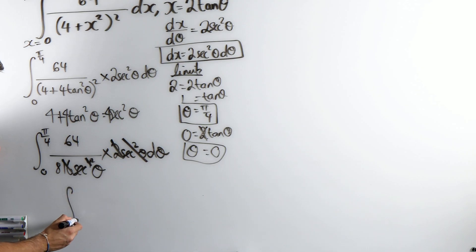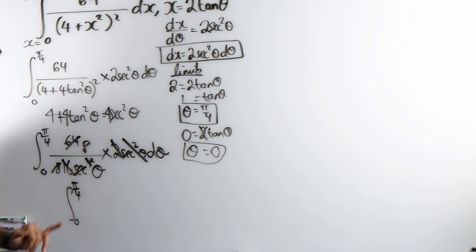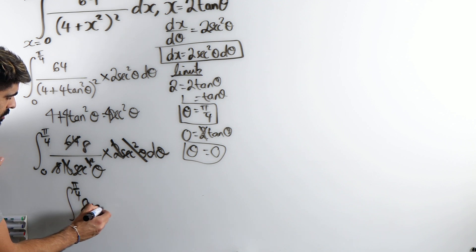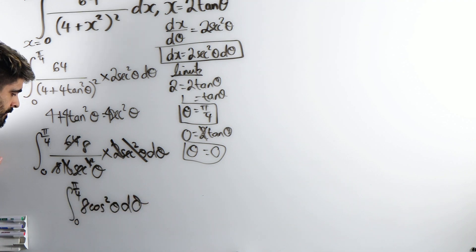So we're going to get the integral between 0 and pi over 4 of 8 over sec squared. Now remember sec squared is 1 over cos squared. I don't know how to integrate sec squared in the denominator. It's going to have to come up to become 8 cos squared theta.